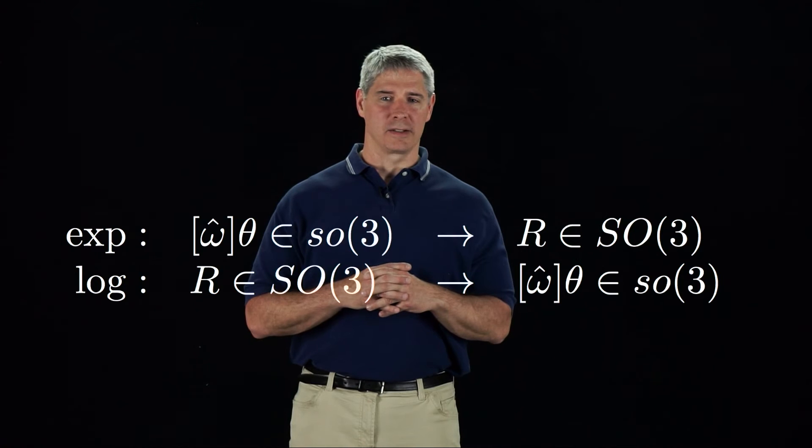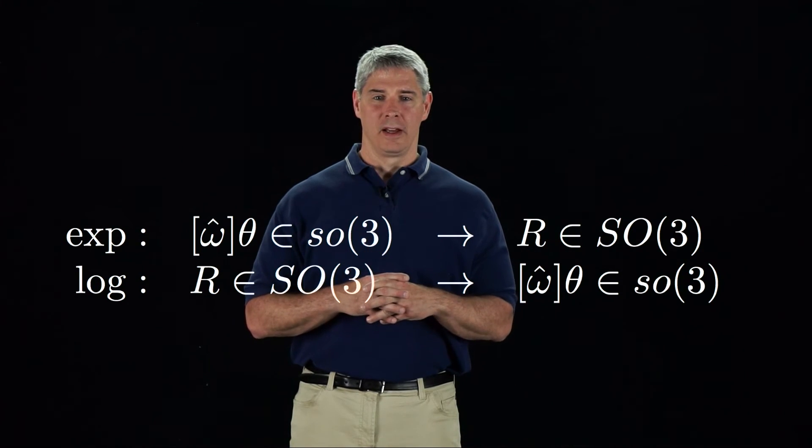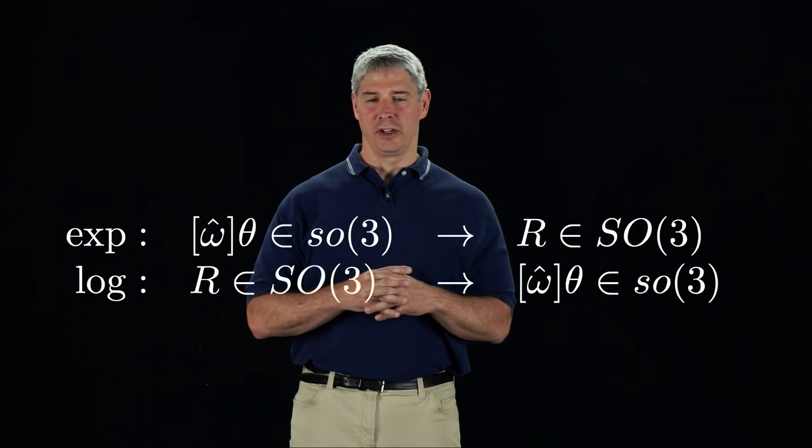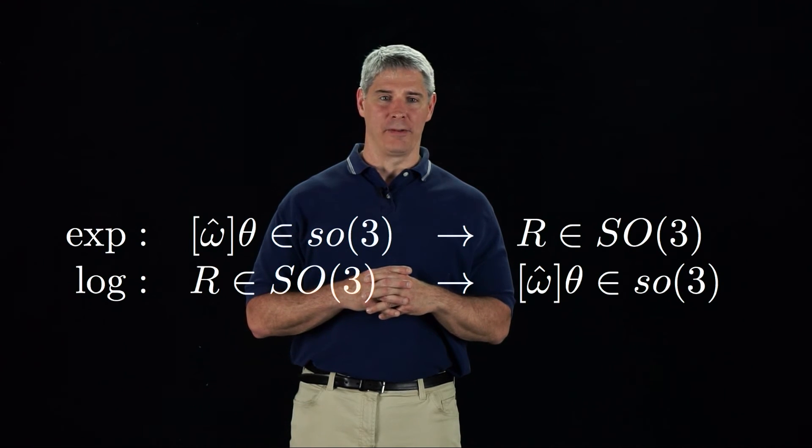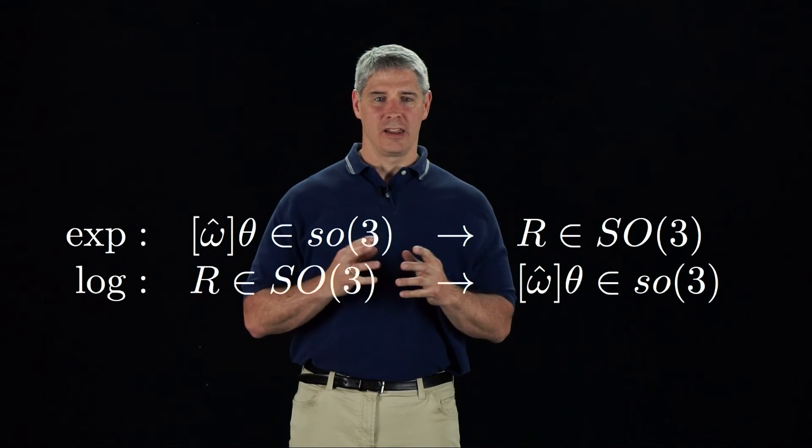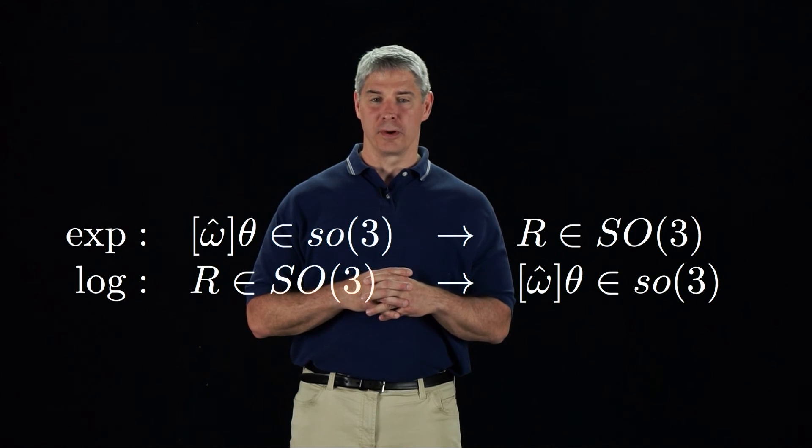Later, when we're studying the kinematics of robots, the matrix exponential and log will become very useful. Basically, for a revolute joint, the unit angular velocity omega hat represents the axis of rotation of the joint, and theta represents how far that joint has been rotated.